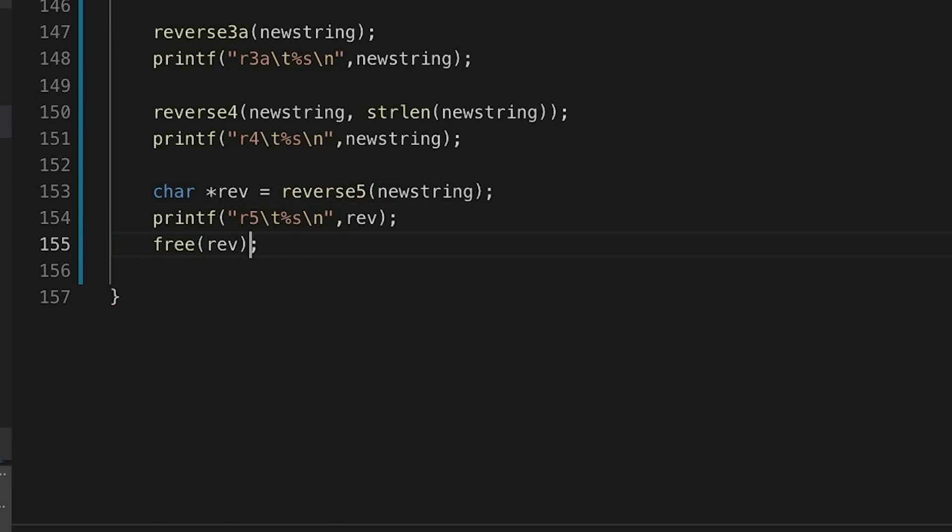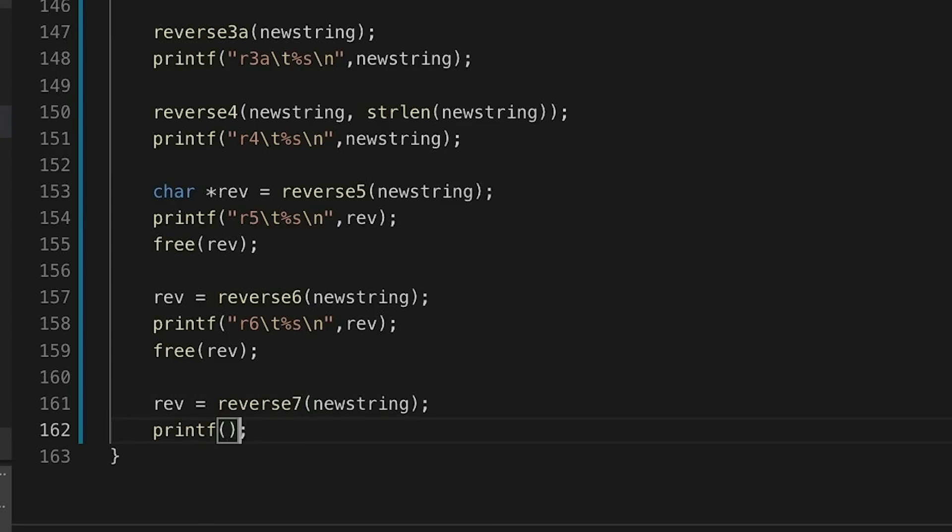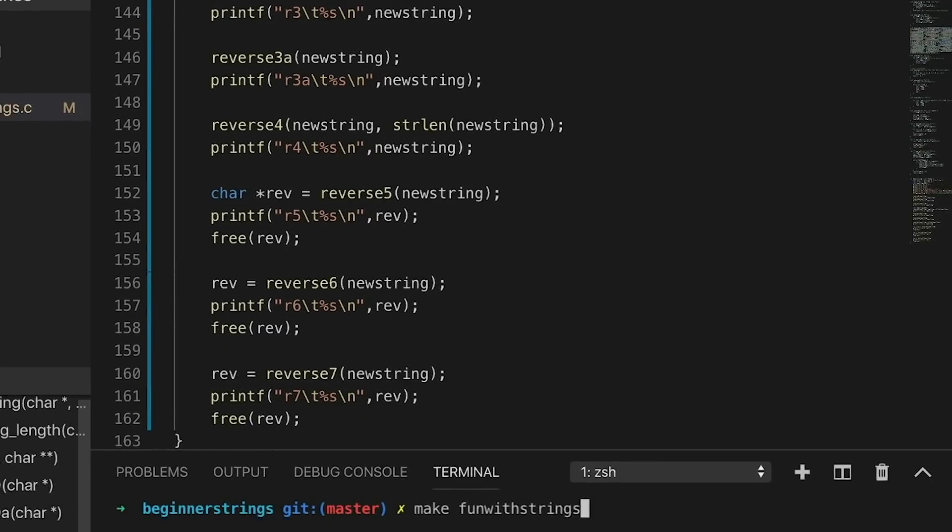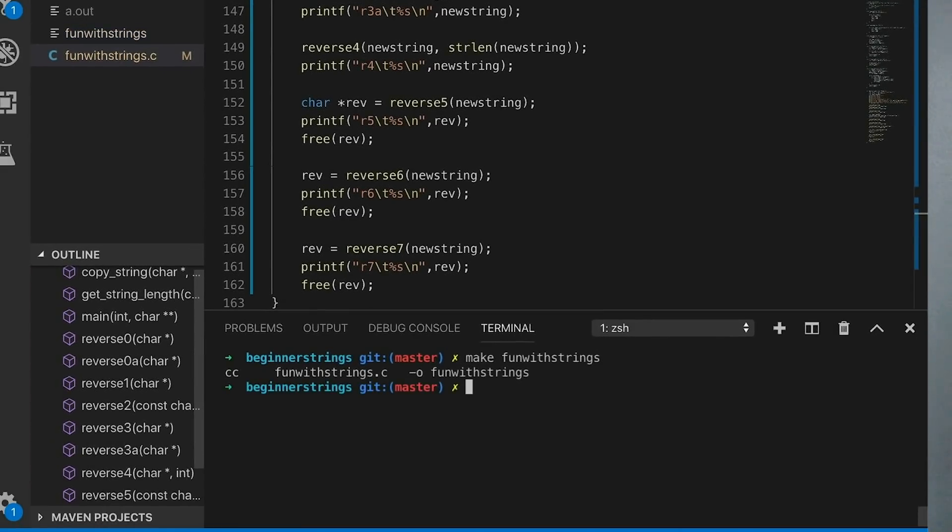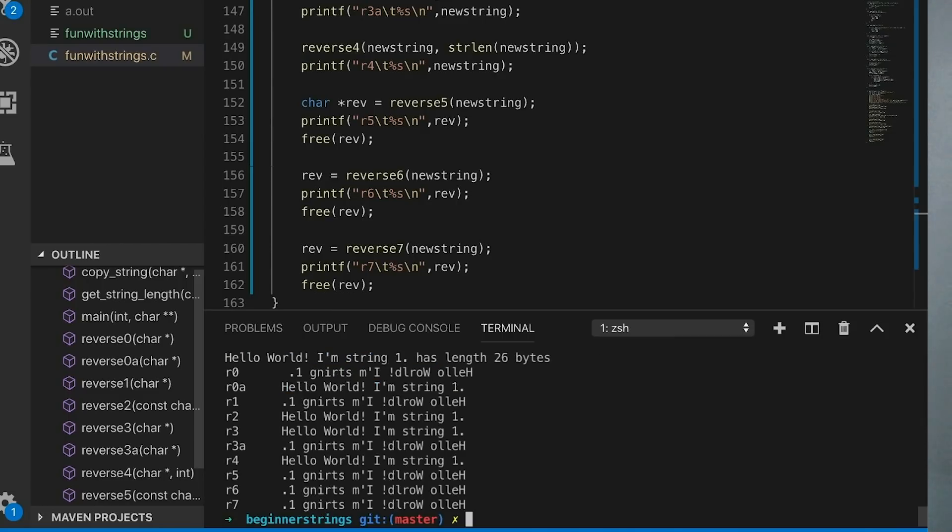Okay, now for the ones that return a copy, print them out, then free the pointer, and we'll do that for reverse six and reverse seven. Okay, that should be it. We compile it, and we run it, and it works. Lots of reversed and reversed reversed strings, which are just the original.